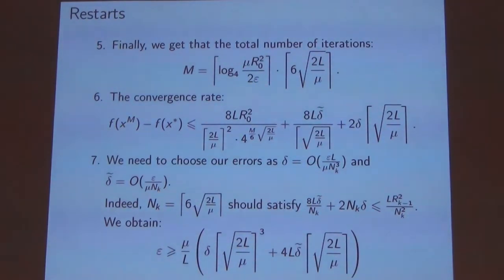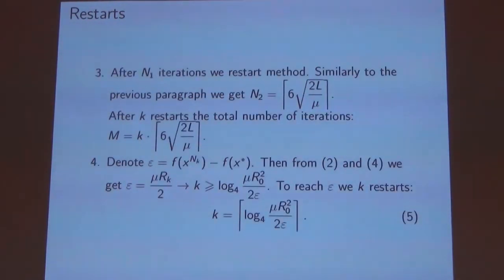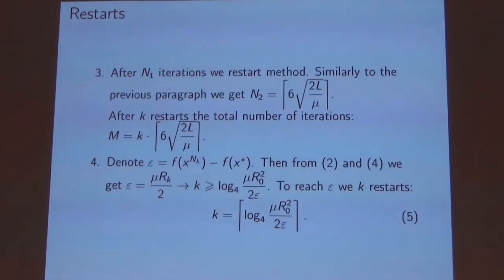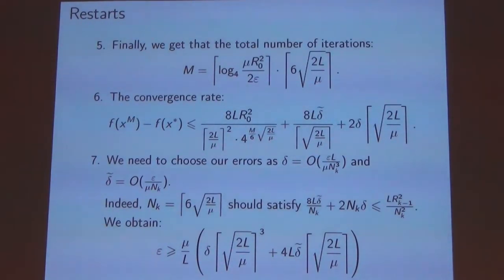We get the total number of iterations on the method and the convergence rate. As you remember, in the first point we bounded the right side with exactness. To make it we need to choose our errors as stated here. Indeed, if we obtain the number of iterations Nk and this number should satisfy this inequality, we have a lower bound on the accuracy epsilon that we want to reach. If we want to have an arbitrary epsilon we need to choose deltas as stated here.